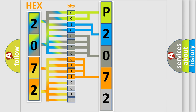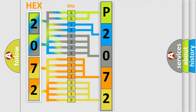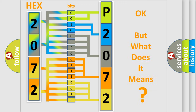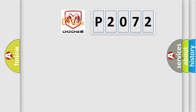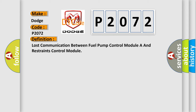A single byte conceals 256 possible combinations. We now know in what way the diagnostic tool translates the received information into a more comprehensible format. The number itself does not make sense to us if we cannot assign information about what it actually expresses. So, what does the diagnostic trouble code P2072 interpret specifically for Dodge car manufacturers? The basic definition is: Lost communication between fuel pump control module A and restraints control module.